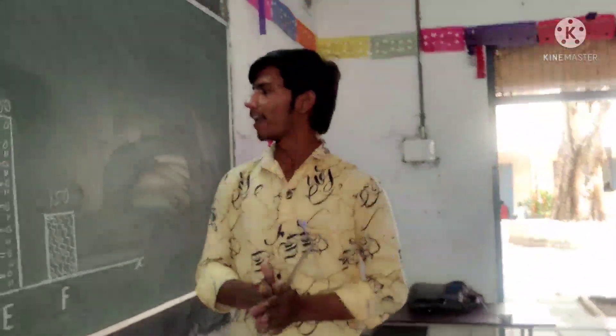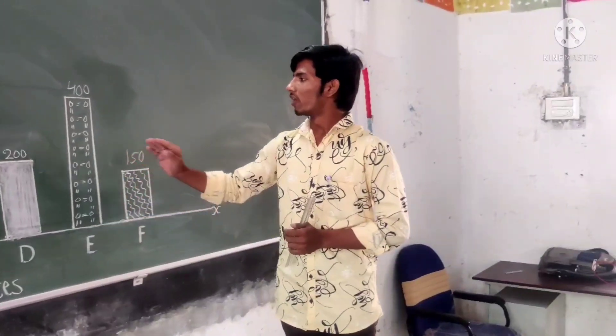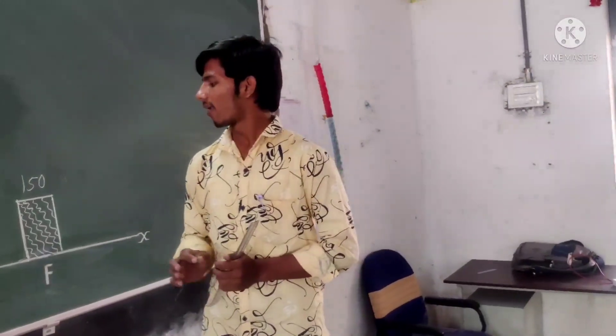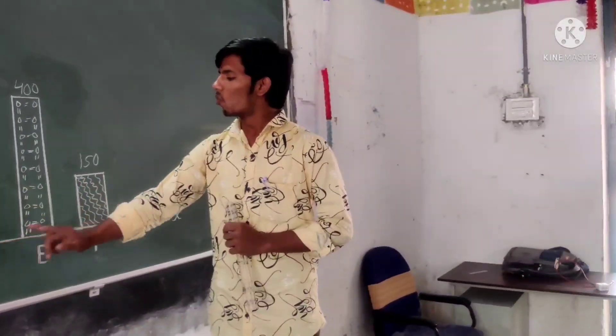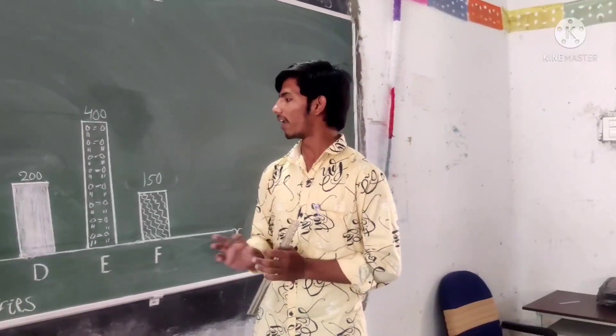And the second highest bar is occupied by country E. It means 400 people live here per 100 square kilometers. In country D, we observe that over 100 square kilometers, only 200 people live here.